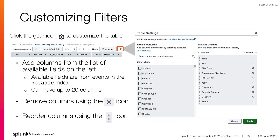To customize the column filters, select the gear icon to the right of the table. The table settings allows you to add up to 20 columns to the list. The available column titles on the left are from the fields in the Notable Index. Select a title to add it to the list. Use the X to remove a column from the list, and the double ellipse to reorder the columns. Remember to select Apply to save the changes.